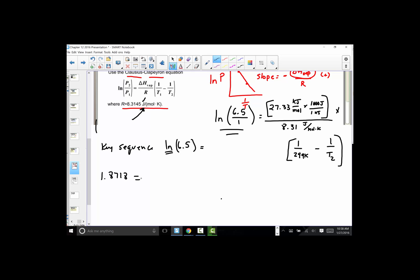I'm going to set that equal to. Next thing I'll do is just simplify this expression. So I'm going to start by saying 27.33 times 1,000 to get that into a joule, and I'll divide that by 8.31. And my screen says 3288.80866.